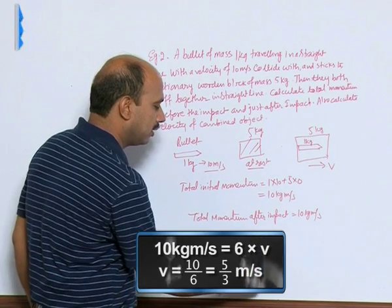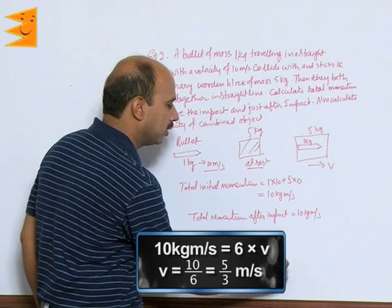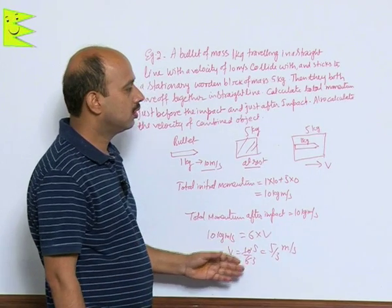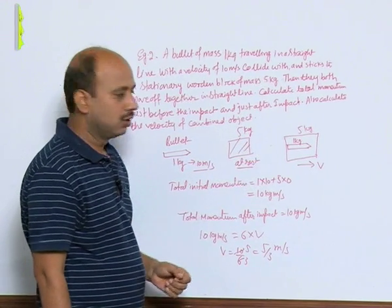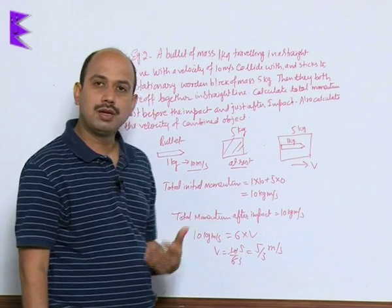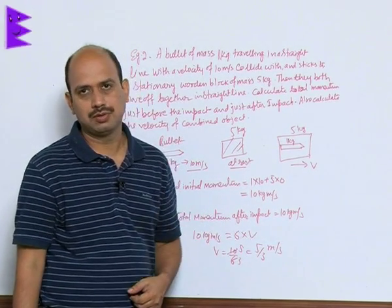5 and 3, that is 5 upon 3 meters per second. So this is the velocity of the combined object. So now here see again there is an application of principle of conservation of linear momentum. So let us do another example.